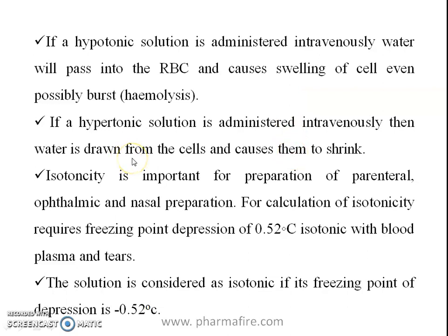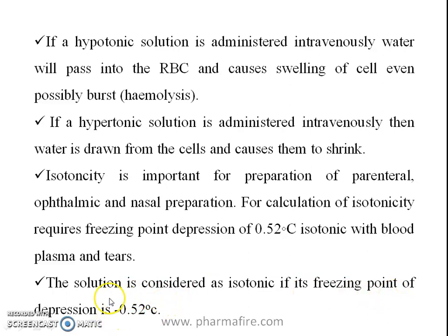This type of question will be asked in different pharmacy competitive exams like the GPAT. Isotonicity is important for preparation of parenteral, ophthalmic, and nasal preparations. For calculation of isotonicity, a freezing point depression of 0.52°C is required. A solution is considered isotonic with blood plasma and tears if its freezing point of depression is 0.52°C — this was asked in GPAT 2015.